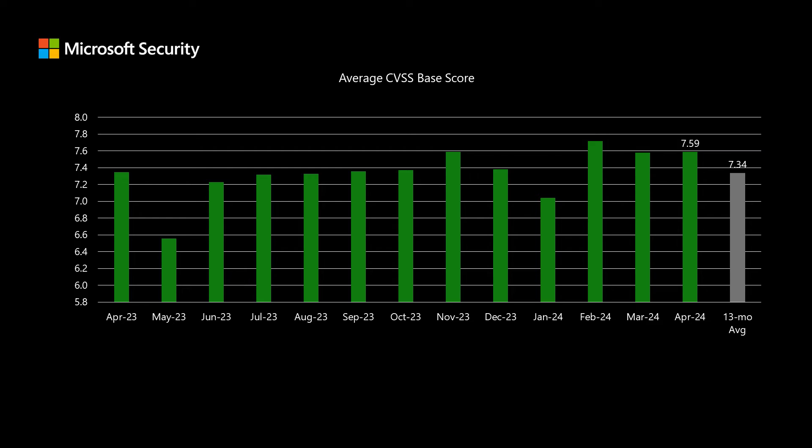The average CVSS score this month is 7.59, compared to an average of 7.34 over the past 13 months — just a little higher than what we've been seeing. When it comes to scoring, the CVSS score is a starting point; it doesn't tell everything about risk. It includes eight different vector strings associated to a CVE that provide the risk level in a kind of bubble. It doesn't include things such as impact, severity, whether it's publicly disclosed, or whether it's known to be exploited in the wild. So it's a starting point, but not the whole picture of risk.